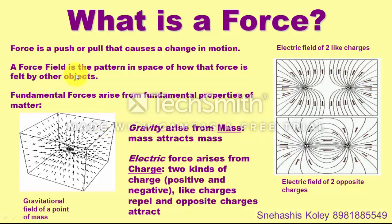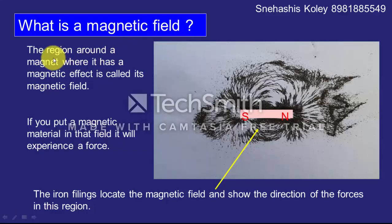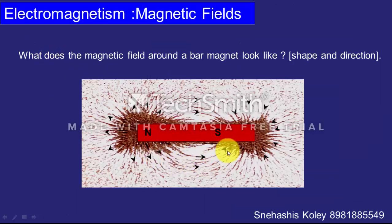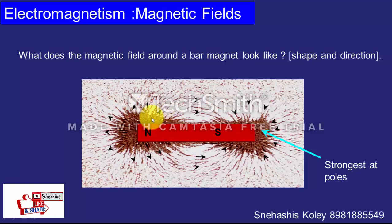A force field is the pattern in space showing how force is felt by other objects. In the next slide, the force is felt by iron filings in a pattern — this is the magnetic field. The region around a magnet where it has a magnetic effect is called the magnetic field. In that region, other magnetic materials or magnets can feel the magnetic force. The arrows show the direction of the magnetic field lines, and the magnetic field is strongest at the poles and weaker at the middle portion.